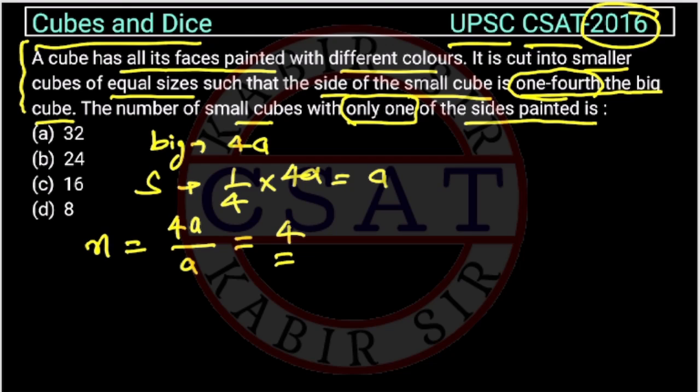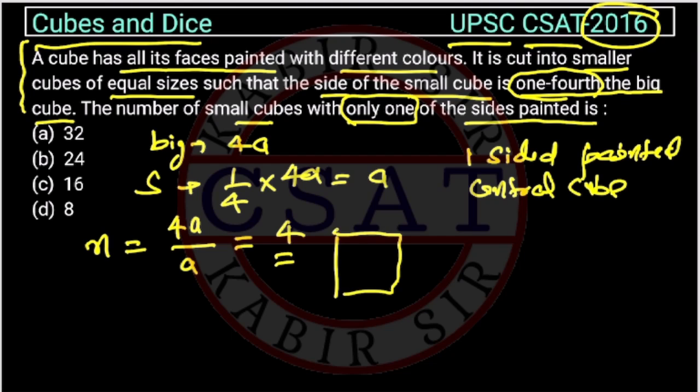Now we have to find one-sided painted. So what is the formula? One-sided painted, or we can say the central cubes—central cubes are the middle ones. Middle one means, suppose this is a cube,